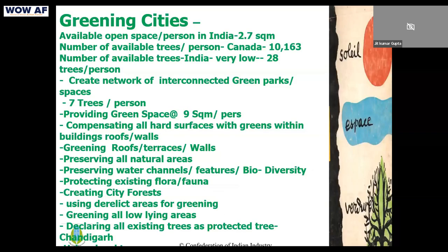Open spaces remain very important. India has only 2.9 square meters per person available, whereas the recommended standard is nine square meters. There are also seven trees per person required — for oxygen, for cooling the city, and for retaining water. Trees absorb heat and absorb water.